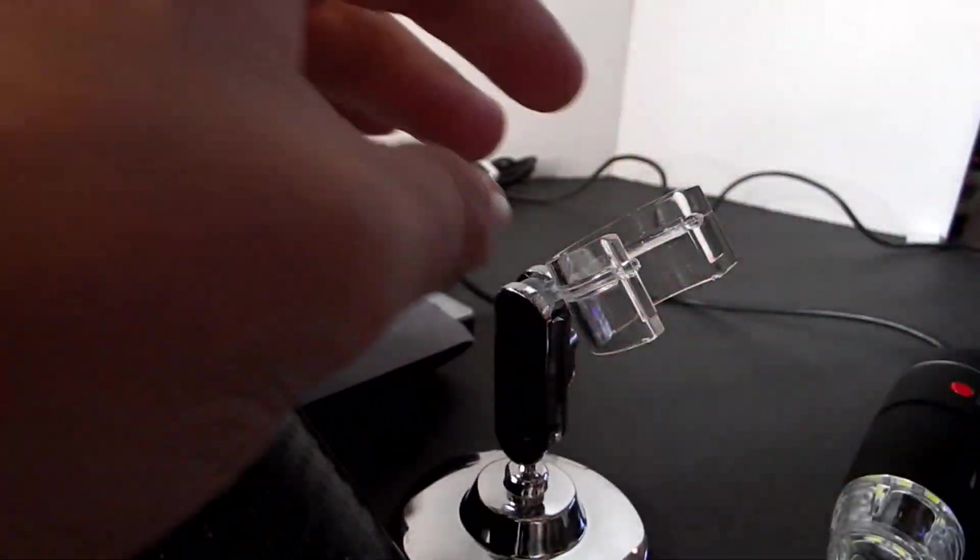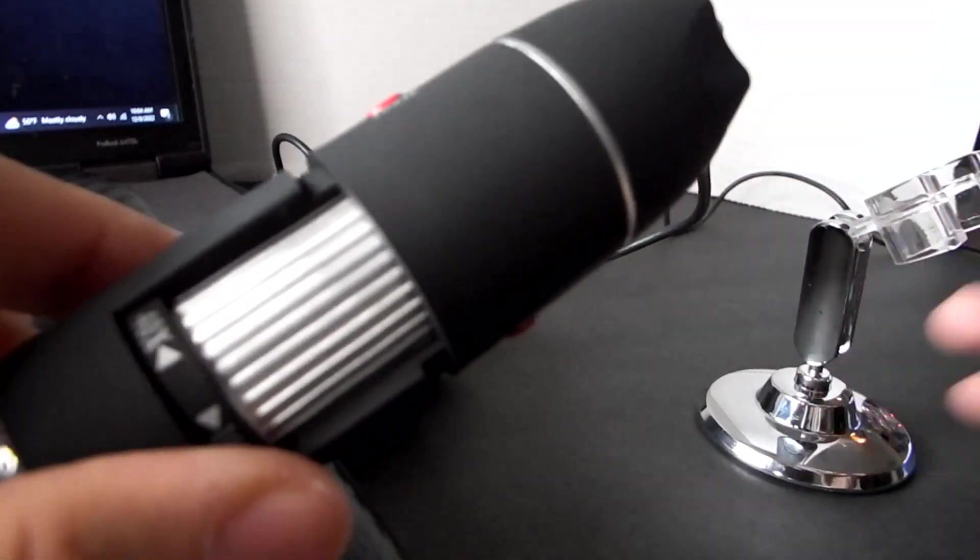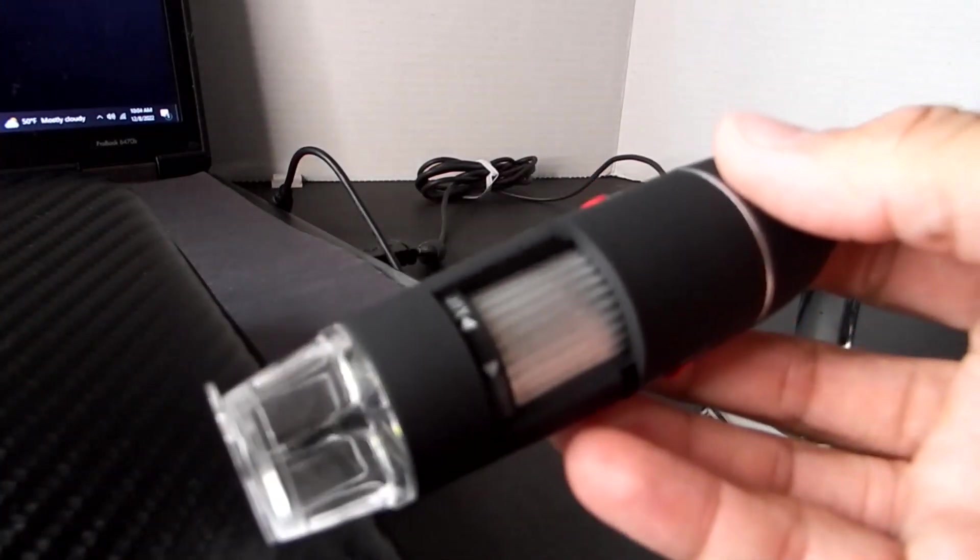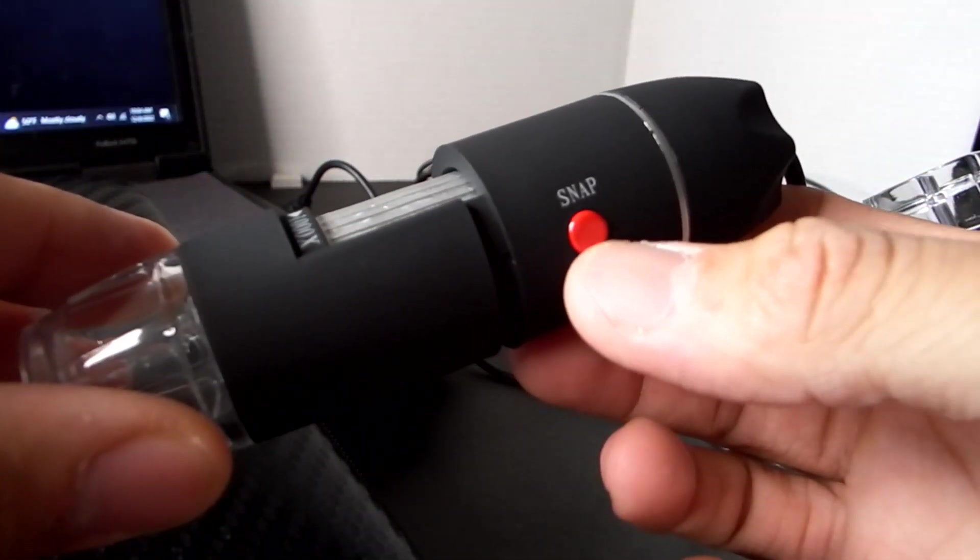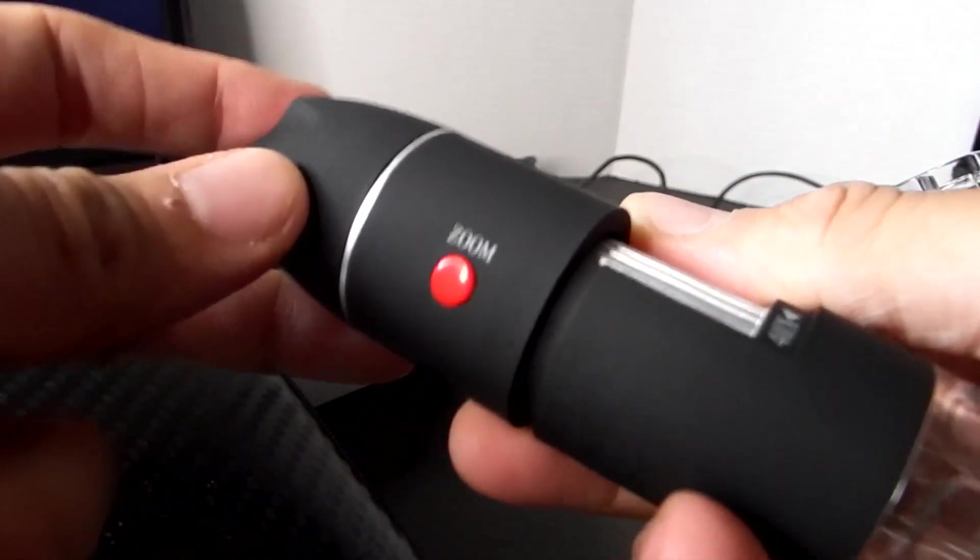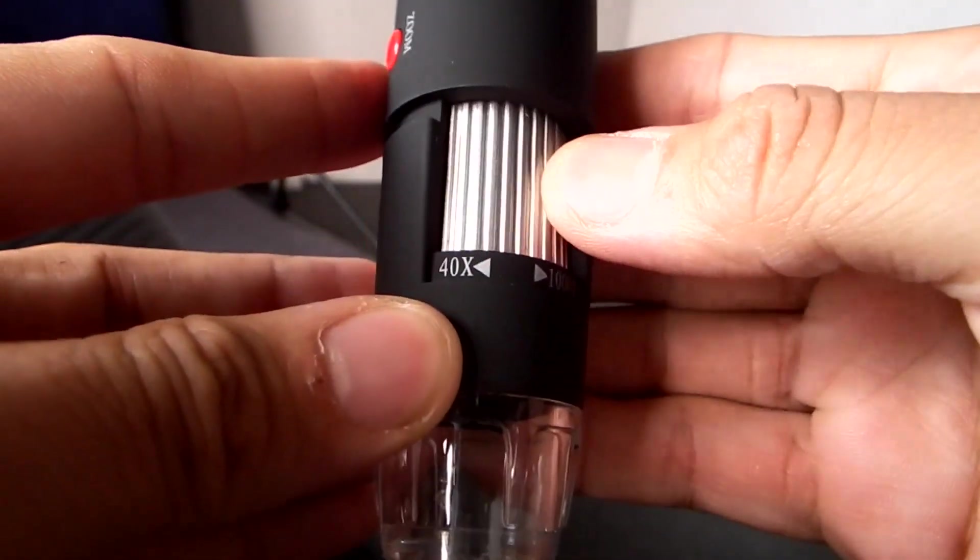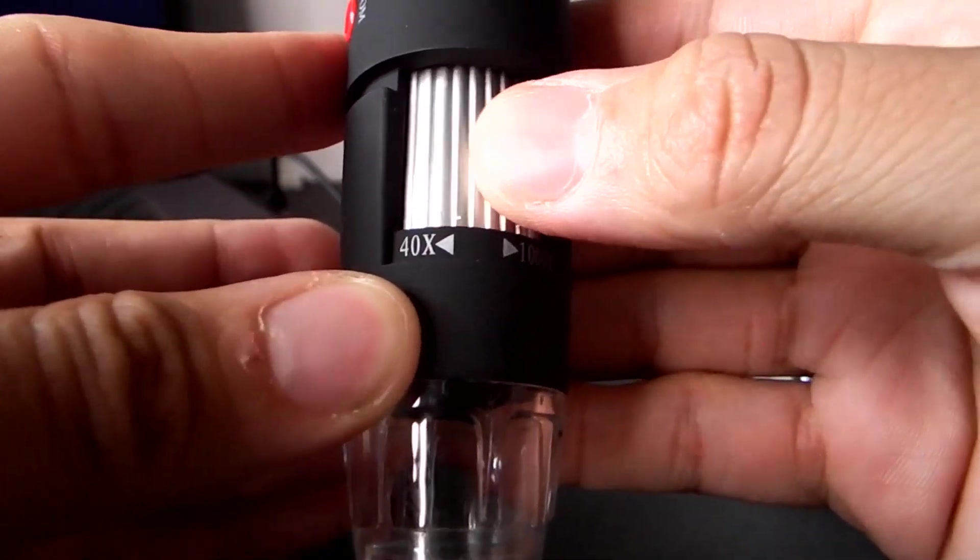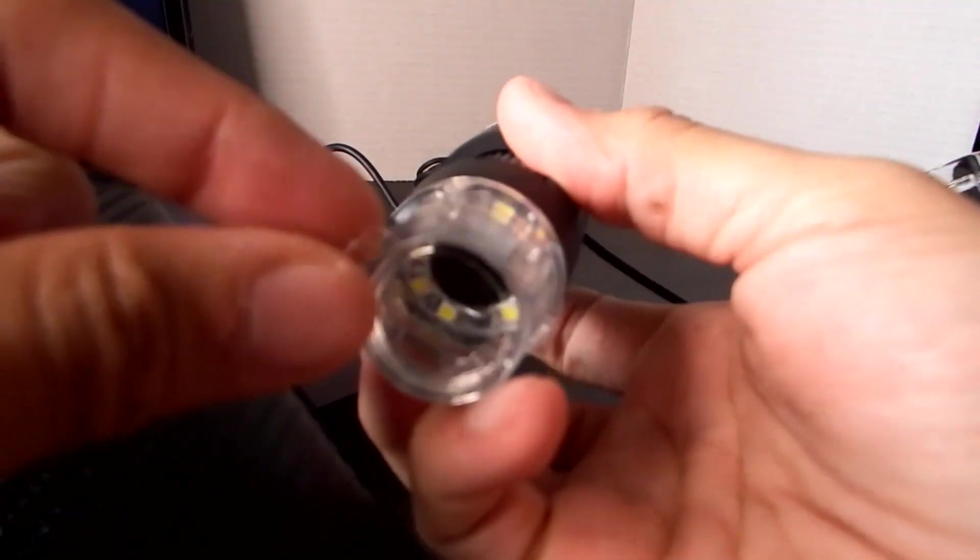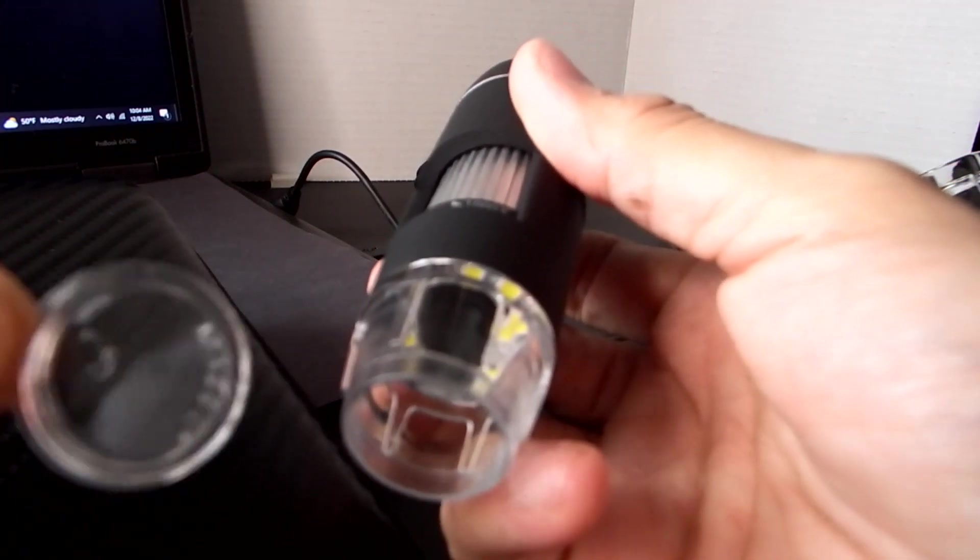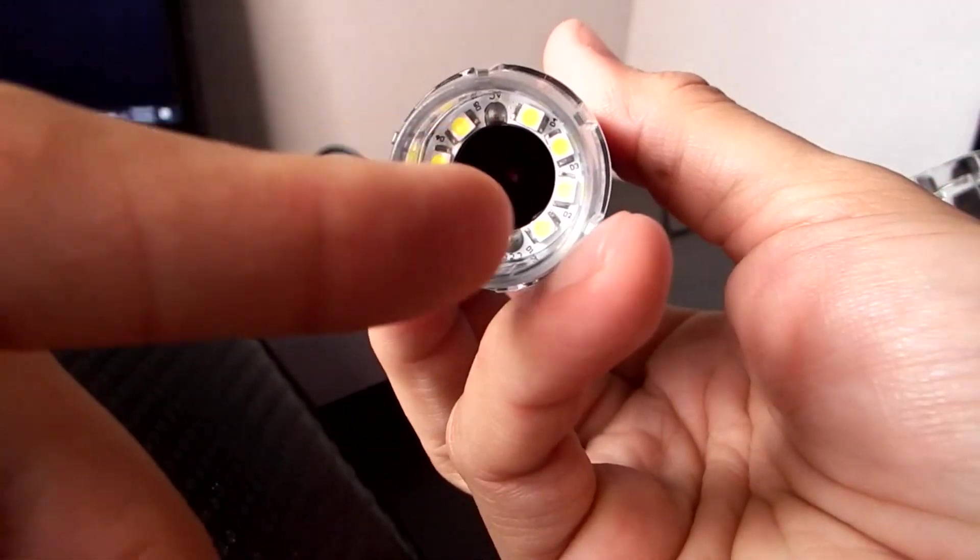The microscope itself has a pretty long wire, looks like it's about three feet long. It has a snap button, the red button here, on the other side it has a zoom button. This knob up here adjusts the focus. When you take off the lens, it has a lens cover to keep the main lens inside clear, and it does have eight LED lights around.